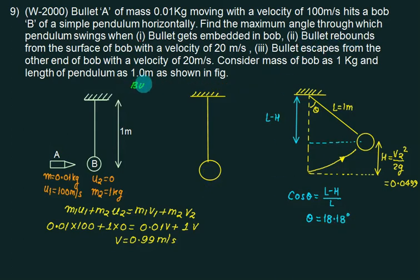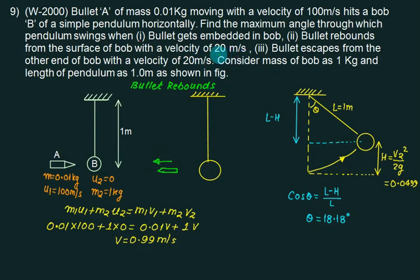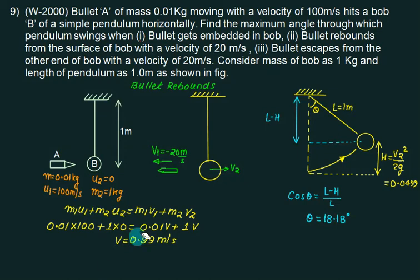In the second part, the bullet rebounds. When the bullet rebounds, it goes back to this side at a speed of 20 m/s. So v1 is taken as a negative value, minus 20. This causes a change in the calculation.